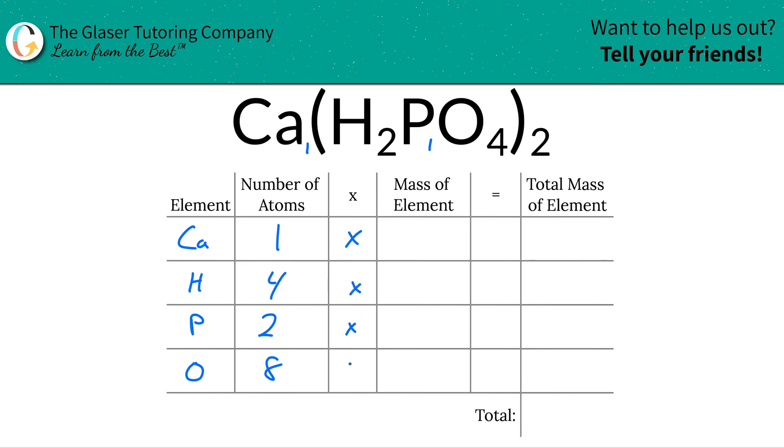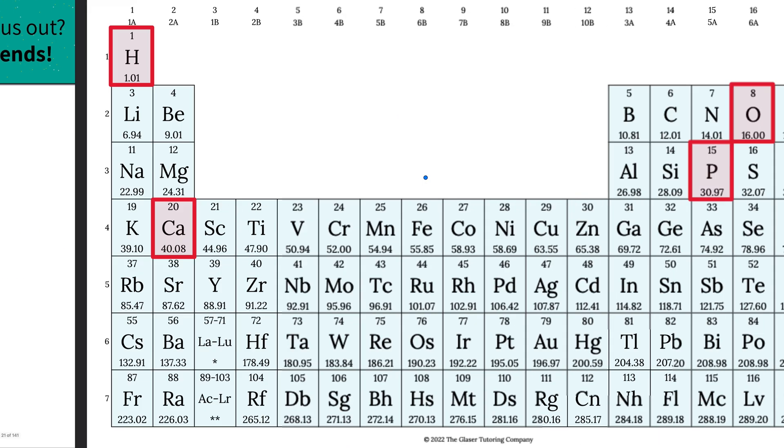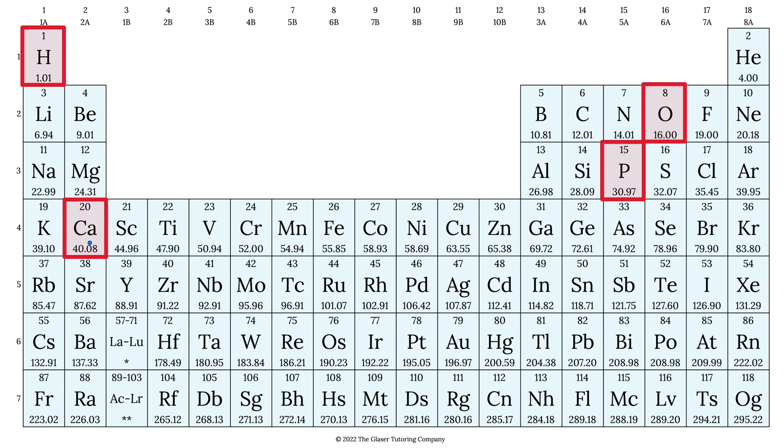Now all we're simply going to do is then multiply these number of atoms by the mass of each particular element. And guess where we look for the masses? Yes, the periodic table. So let's take a look. Here is the mass of calcium, 40.08, hydrogen is 1.01, phosphorus is 30.97, and oxygen is 16.